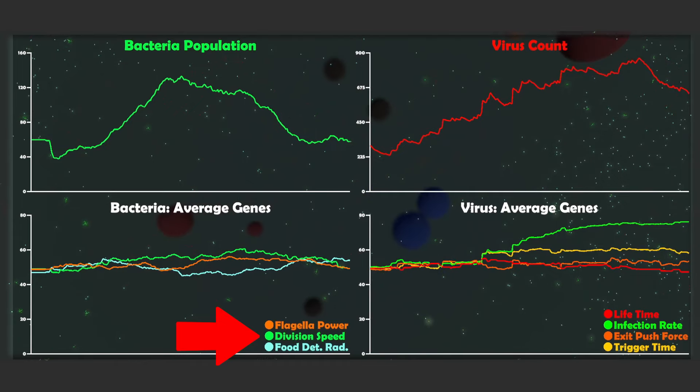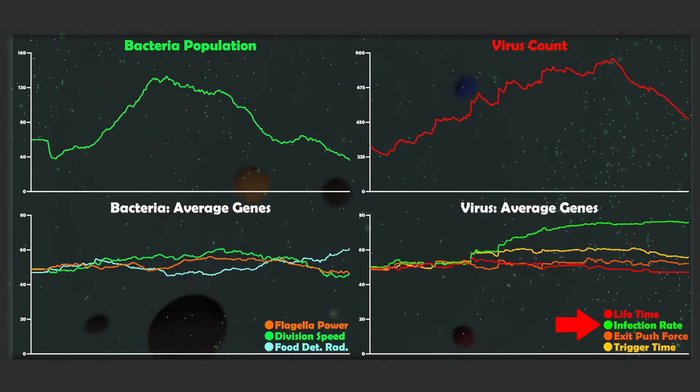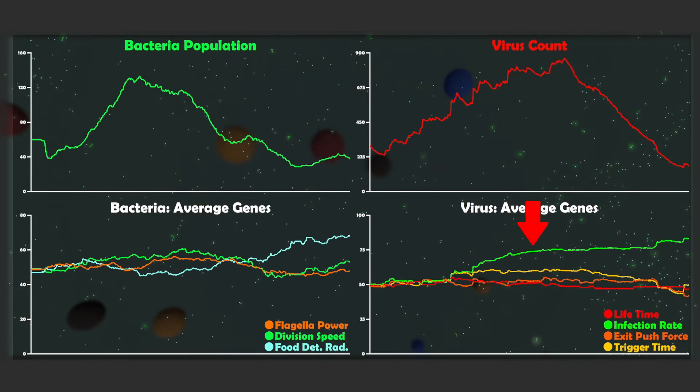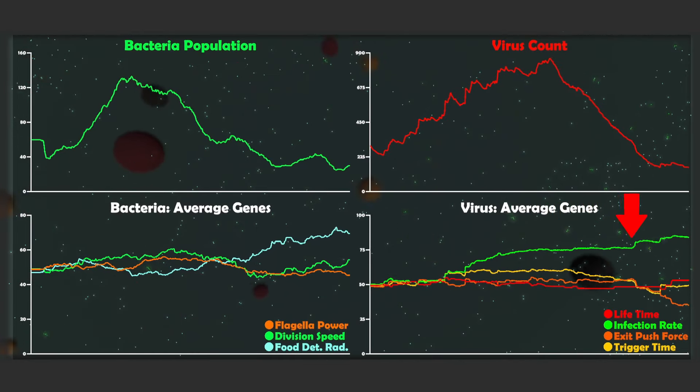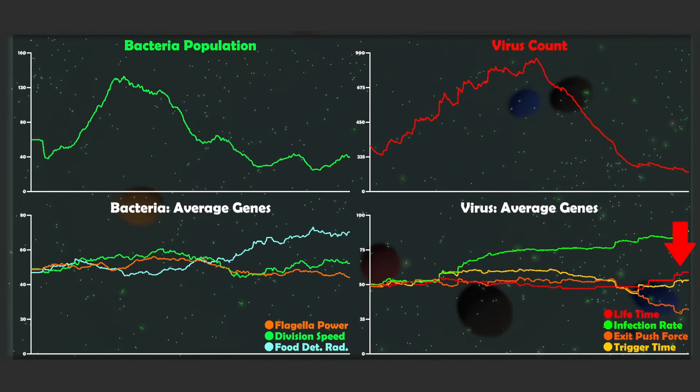Here you can also see that the bacteria doesn't have the viral resistant gene yet. But on the contrary, the virus does have the infection rate gene. And as you can see that it's a very important gene since the value constantly keeps climbing. Since a higher infection rate means that the virus is more successful in infecting the host and multiplying. The lifetime gene was slowly but constantly climbing. So I think that's good.